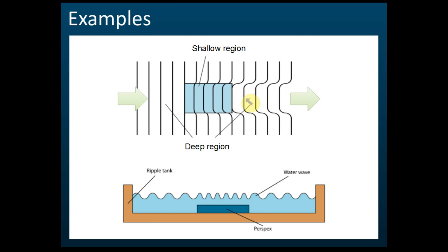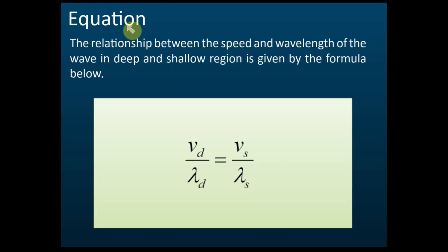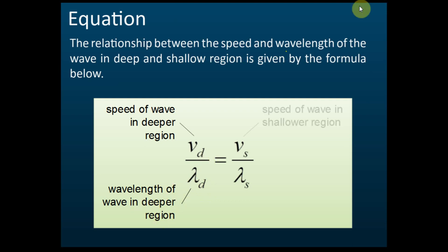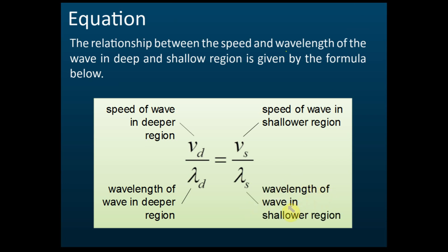Now let's look at the equation that relates wavelength and speed in a deeper region and a shallower region. Here, d represents the deeper region and s represents the shallower region. The relationship between speed and wavelength in deep and shallow water is given by the formula: vd over λd equals vs over λs. This is derived from v equals f times lambda. Here, vd is the speed of the wave in the deeper region, λd is the wavelength in the deeper region, vs is the speed in the shallower region, and λs is the wavelength in the shallower region. We will use this formula to solve problems.